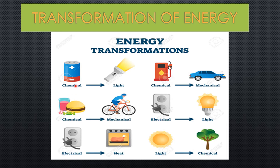Chemical energy found in a battery cell can be transformed into light energy in a flashlight. Chemical energy found in food can be transferred into mechanical energy, which can allow you to have the energy to move a bicycle. Electrical energy can be transferred to heat energy, which can be used to warm up food or work any other electrical appliance.